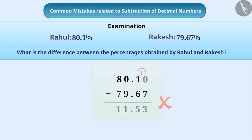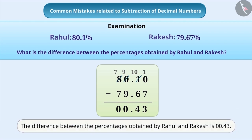The correct understanding is that we have to subtract 79.67 from 80.1. We will write 0 after 1 to make the values equal in digits. And then we will do the subtraction as shown below. Pause the video and understand the concept. By doing so, the correct answer will be 0.43.